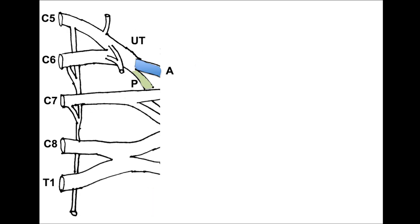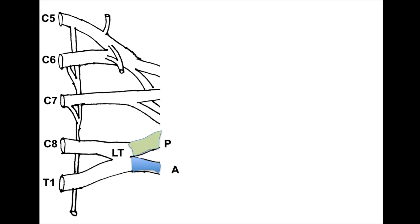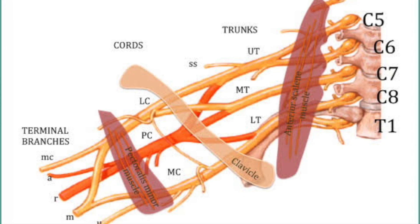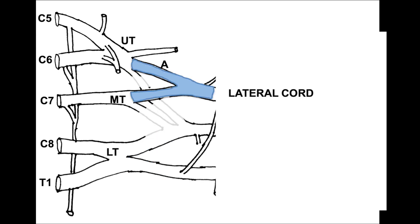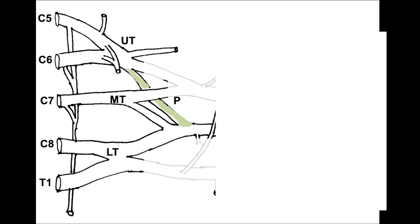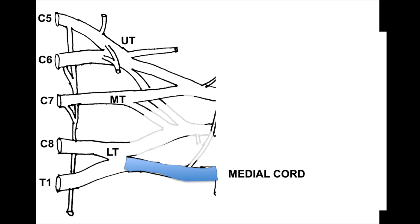Each trunk divides approximately behind the middle third of the clavicle into anterior and posterior divisions, which pass downward behind the clavicle into the axilla — giving three anterior and three posterior divisions. These recombine into three cords named by their position relative to the axillary artery. The lateral cord is formed by the anterior divisions of the upper and middle trunks. The posterior cord is formed by the posterior divisions of all three trunks. The medial cord is formed by the anterior division of the lower trunk only.